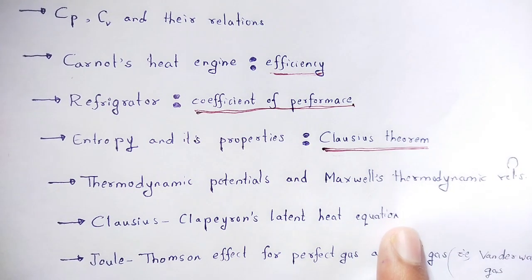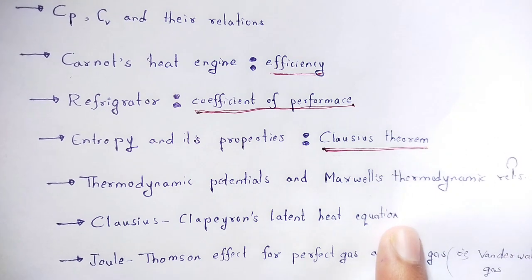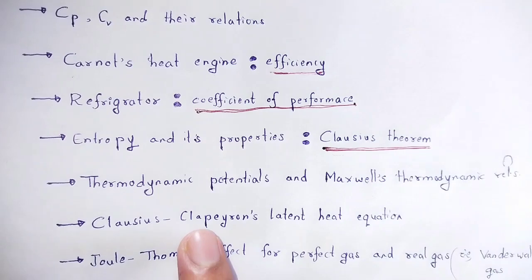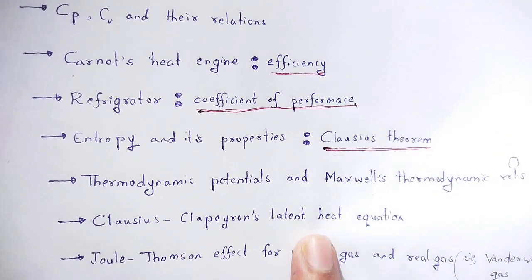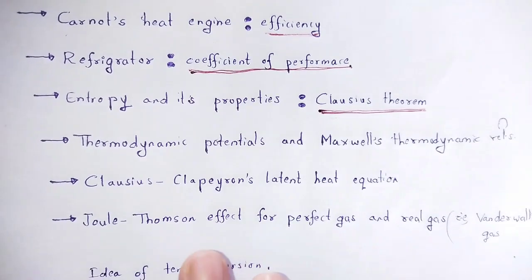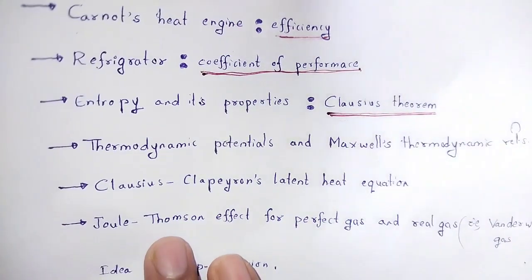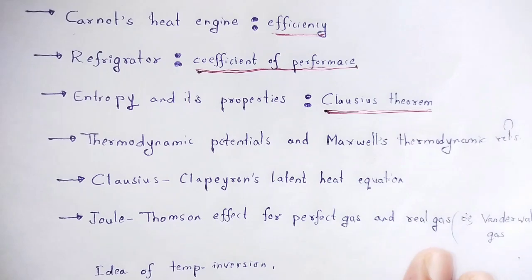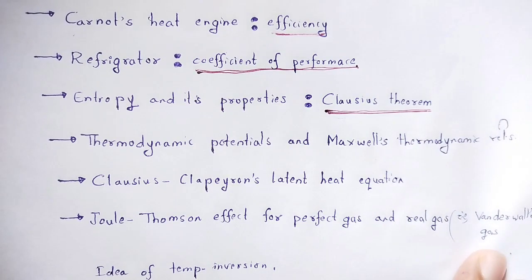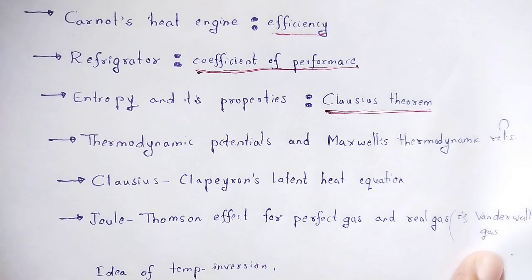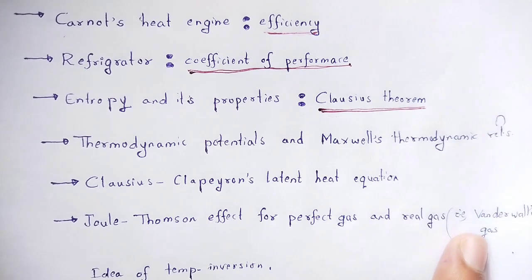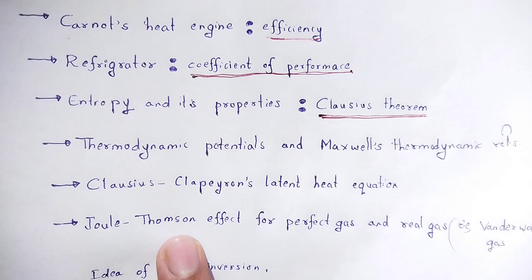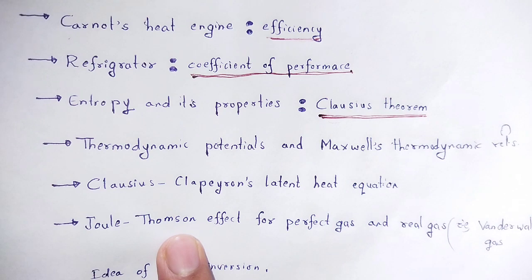Next, Clausius-Clapeyron latent heat equation - this equation covers different terms. Then, Joule-Thompson effect for perfect gas and real gas. For ideal gas, the Joule-Thompson effect has specific characteristics.